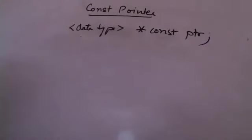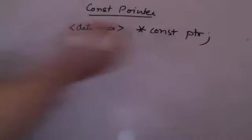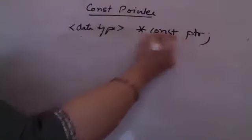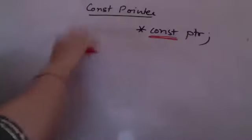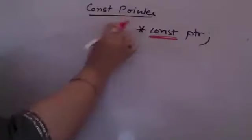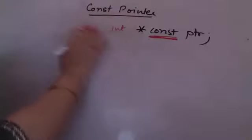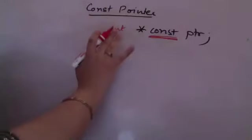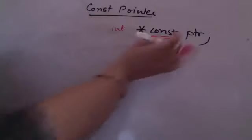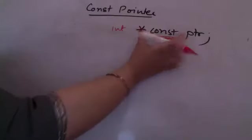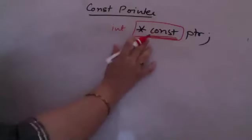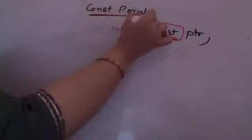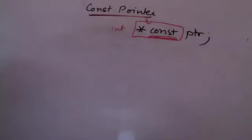Understand what I mean by a constant pointer. Whenever I mention the keyword 'constant' before the variable name after the data type — whether integer, character, float, or any other data type including class — and whenever I mention constant in between the pointer declaration, this is a constant pointer. This means that this pointer is a constant.